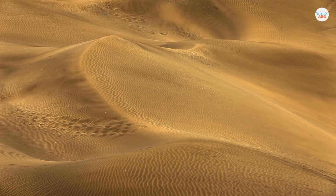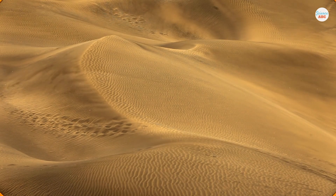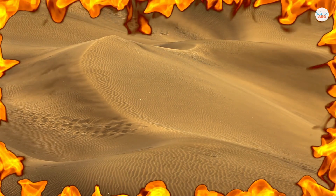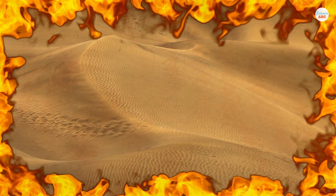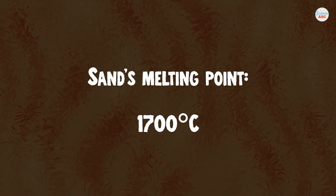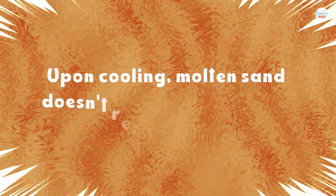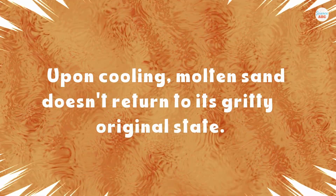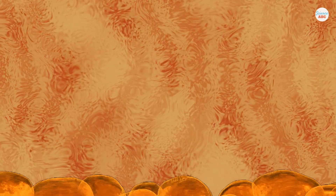This might be hard to believe, but glass is made from liquid sand. More specifically, glass is made by heating ordinary sand until it melts and turns into a liquid. The melting point of sand is very high, around 1700 degrees Celsius. When the molten sand is allowed to cool, it doesn't return to its gritty, original state. The heating causes it to undergo a complete chemical transformation.